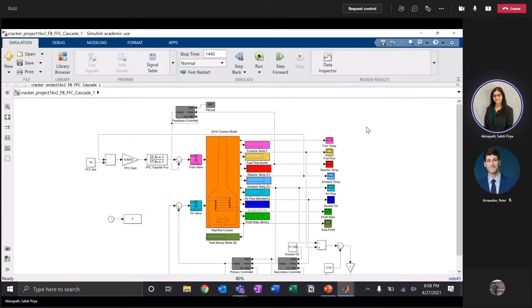Here is the control scheme for the NAFTA cracker process. First, there is a feedback controller from the reactor temperature to the fuel valve. Then, there is a feedforward controller to control the ambient temperature disturbance by adjusting the fuel valve.